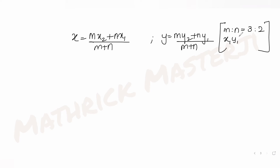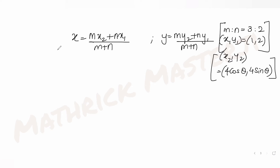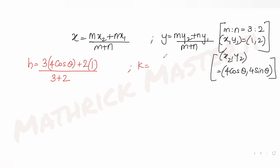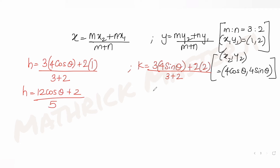Here x₁, y₁ are coordinates of A = (1, 2), and x₂, y₂ are coordinates of B = (4cosθ, 4sinθ). Substituting: h = (3·4cosθ + 2·1)/(3+2) and k = (3·4sinθ + 2·2)/(3+2). This gives h = (12cosθ + 2)/5 and k = (12sinθ + 4)/5.